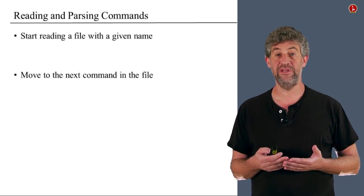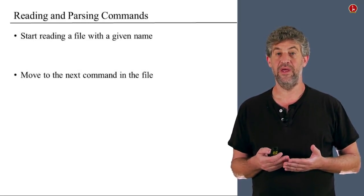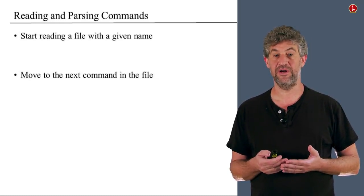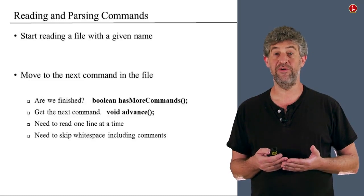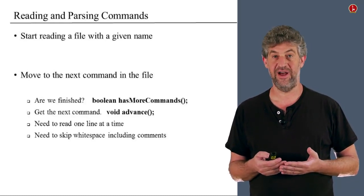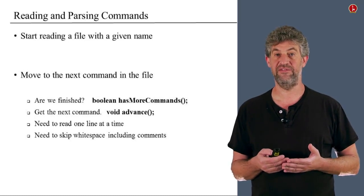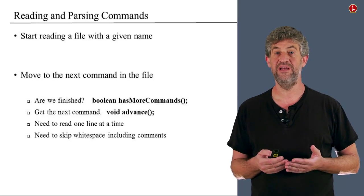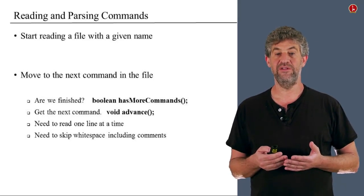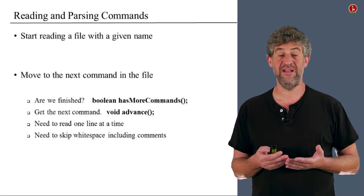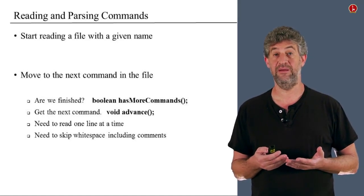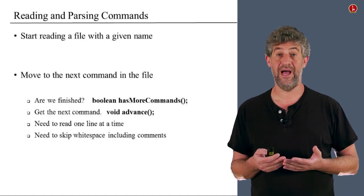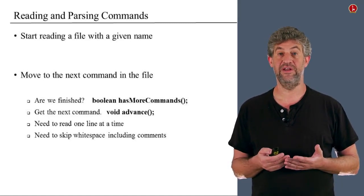Once you've started reading a file, you should be able to get the next command in the file each time. In terms of methods, you'll probably first have to know whether you've finished the file already — are there more commands or have you reached the end of the file? Then you'll need to read the next command into some kind of string. This entails string handling capability and the ability to read line by line in your language.